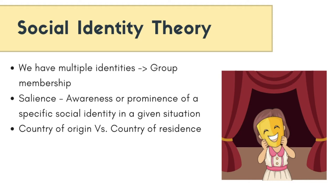Since we have multiple social identities, the theory also suggests that in a given situation, the most salient social identity will influence our behavior. This basically means that the identity that becomes most apparent is taking the front stage — like in this example or this picture — and is the one that is likely to have an influence on our behavior in that situation.